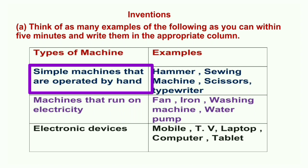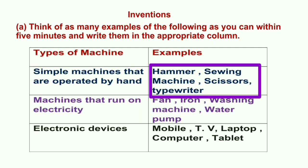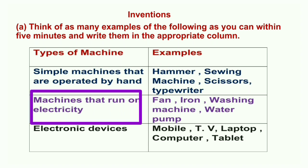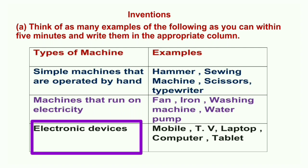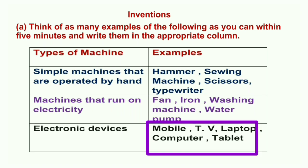Answer — Types of machines with examples: One, simple machines operated by hand — examples: hammer, swing machine, scissors, and typewriter. Next, machines run on electricity — examples: fan, iron, washing machine, water pump. Next, electronic devices — examples: mobile, TV, laptop, computer, and tablet.